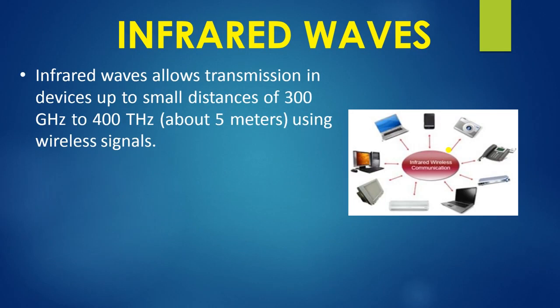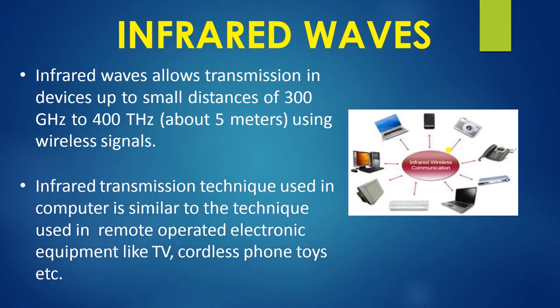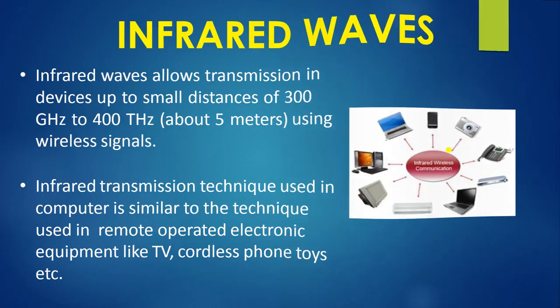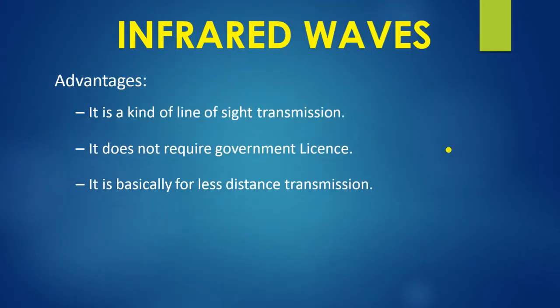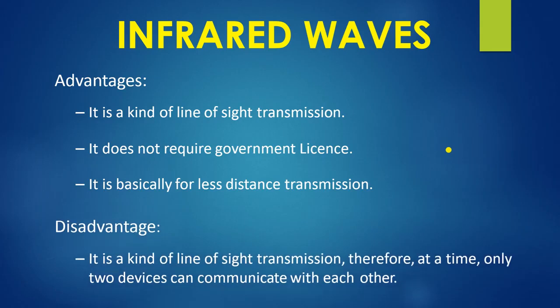Infrared waves — you already know what infrared waves are. They are used in cameras, phones, remotes, car keys, and so on. The technique used in computers is similar to that used in remote-operated electronic equipment like TVs, cordless phones, and toys. These are the advantages and disadvantages of infrared.